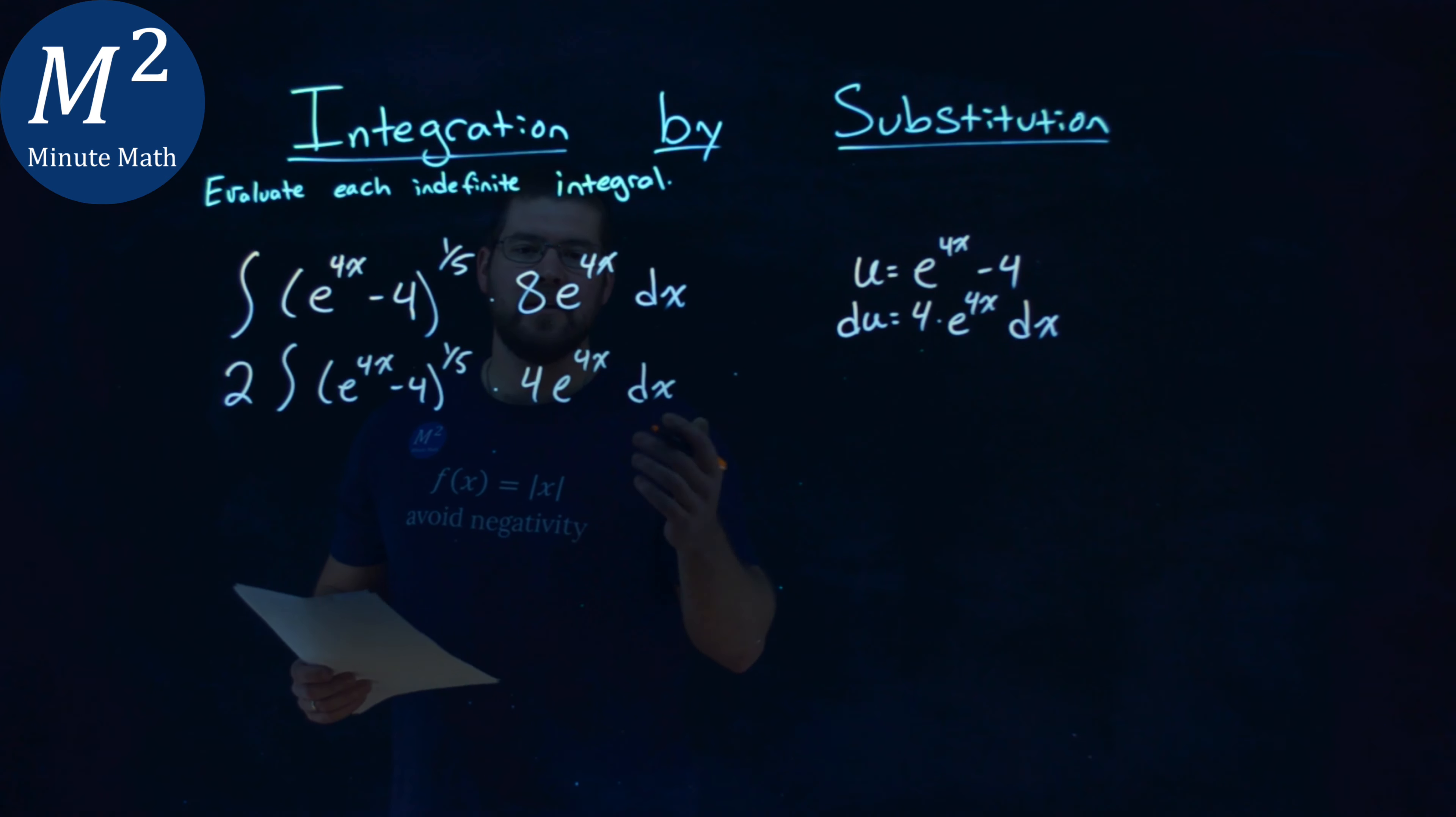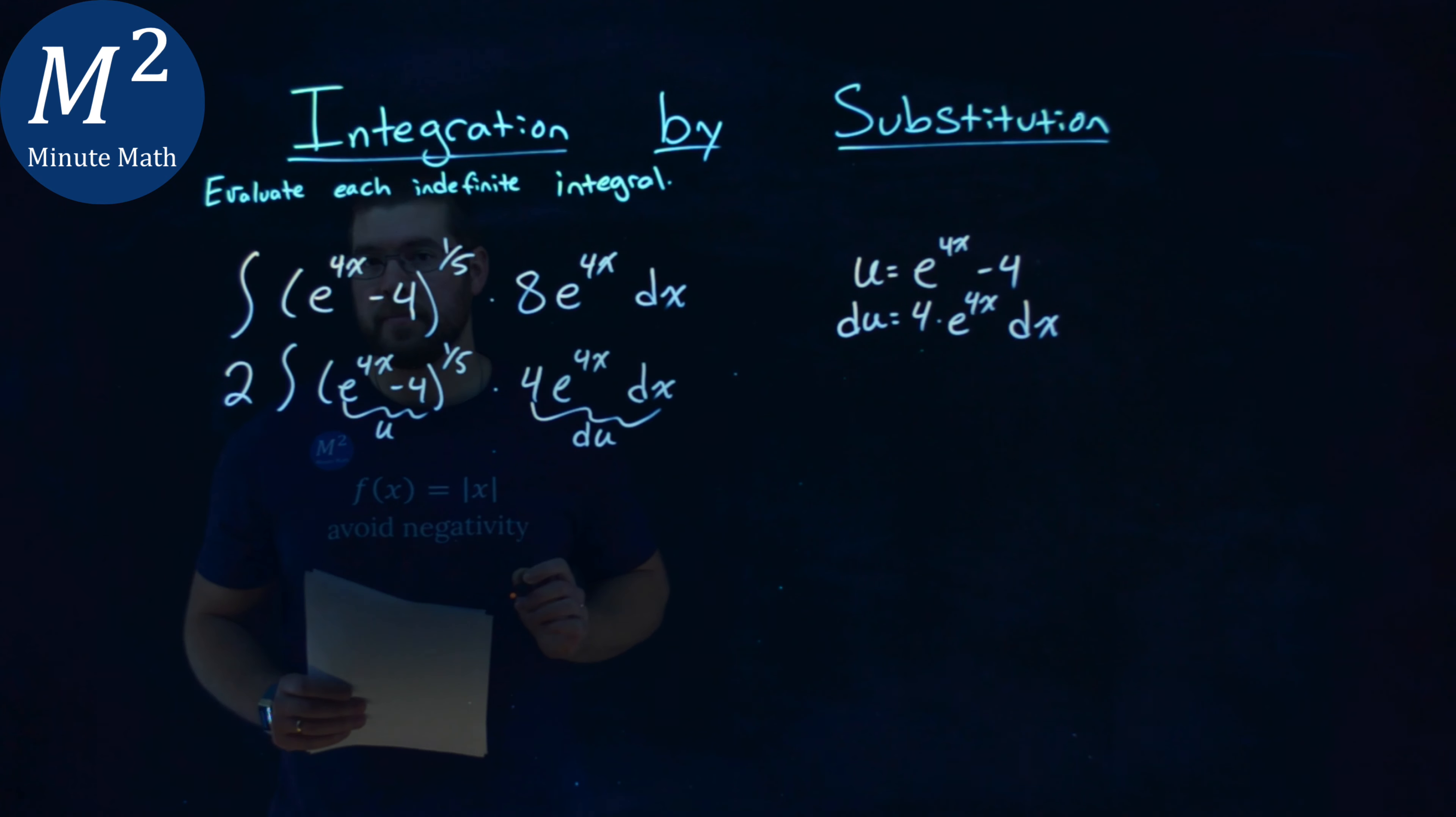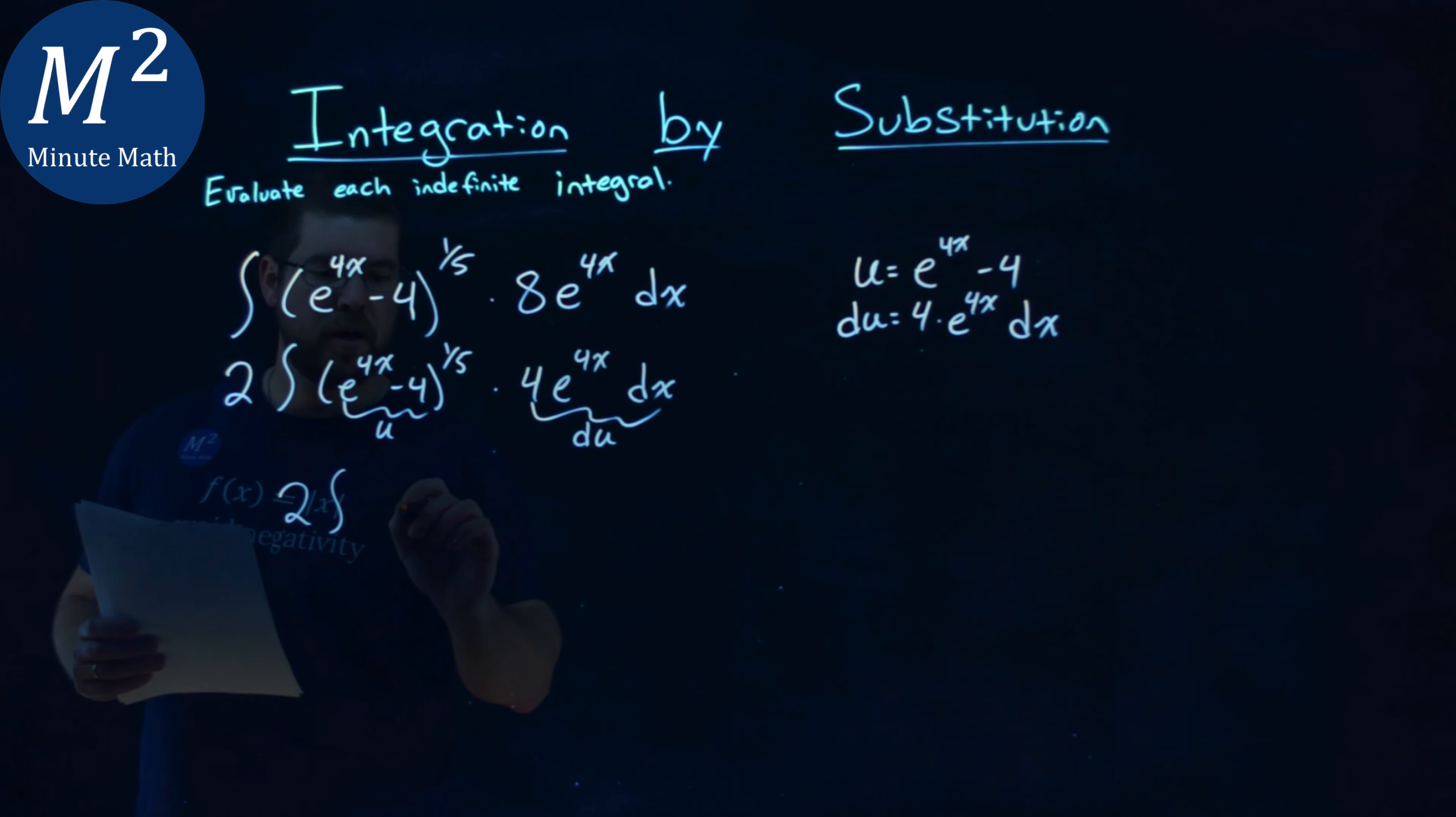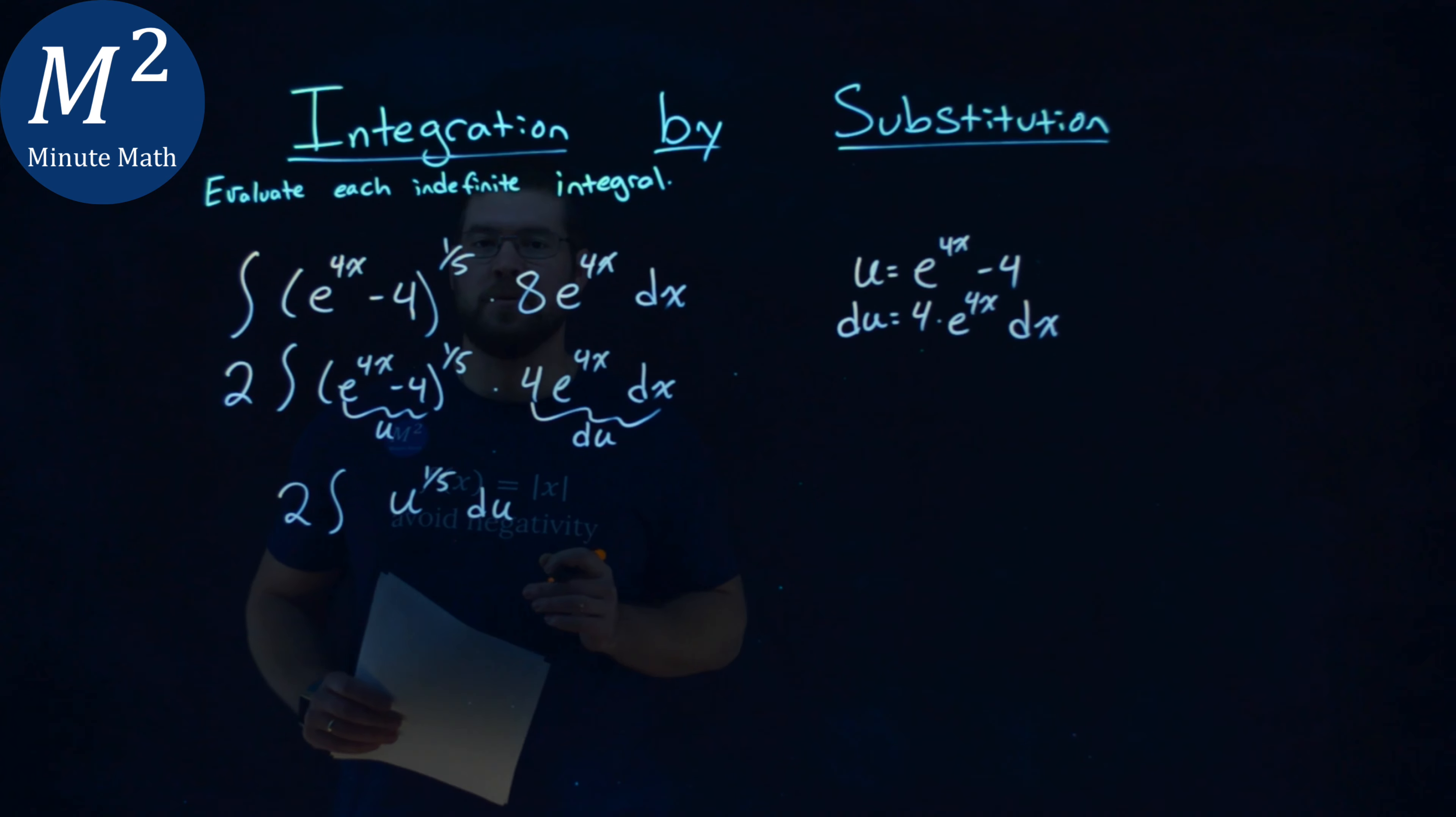And now we easily have our du value right here and our u value. So let's go put that in. We have 2 times the integral of u to the 1/5th power du. Now that's a much easier integral to solve.